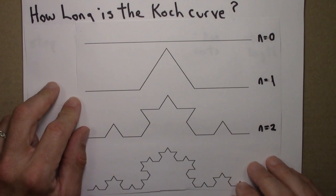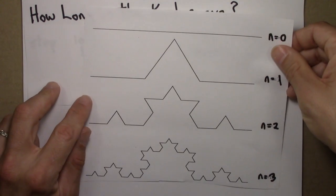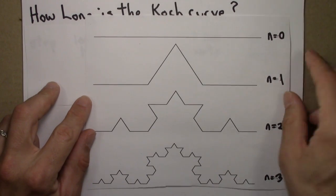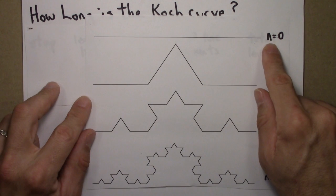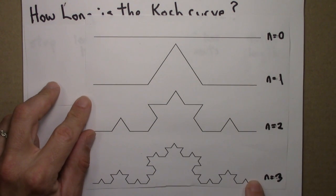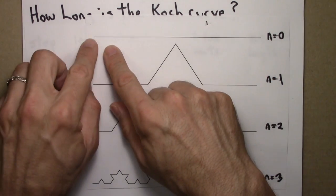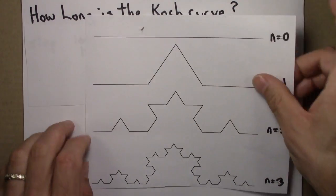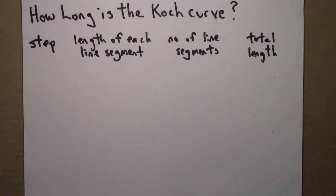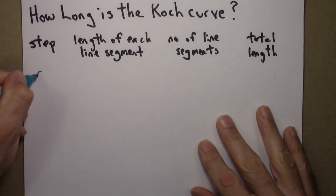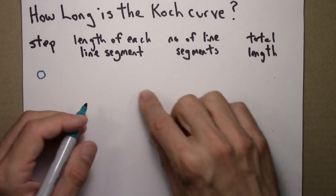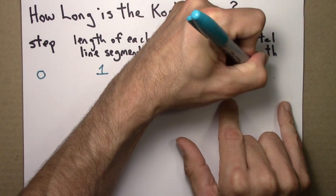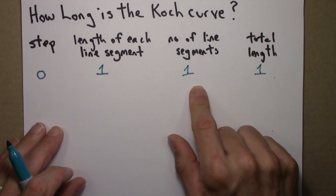The question before us is: how long is the Koch curve? As a reminder, you calculated its dimension in the previous section. Here are the steps in its construction. I'm going to come up with an expression for the length at the zeroth step, the initial step, and then after one step, two steps, three steps, and so on. Let's call the initial length one — say, one meter. At step zero, there's only one line segment with length one, so the total length is one.